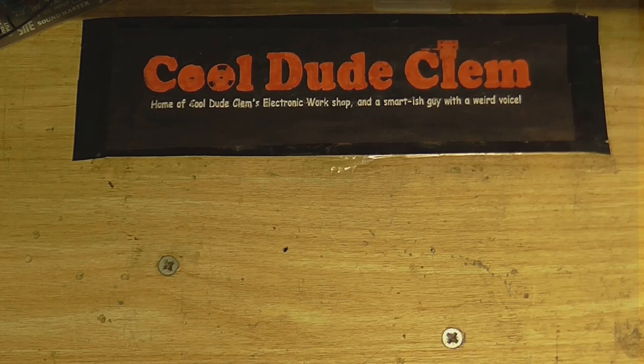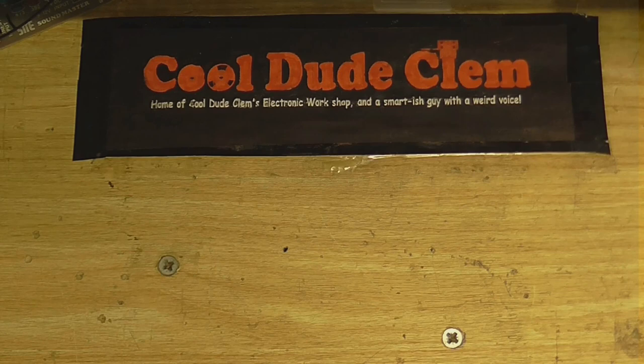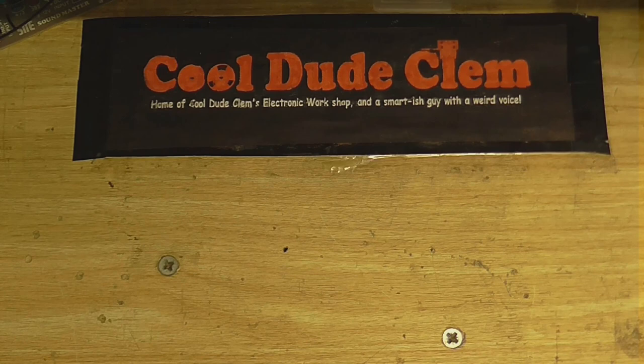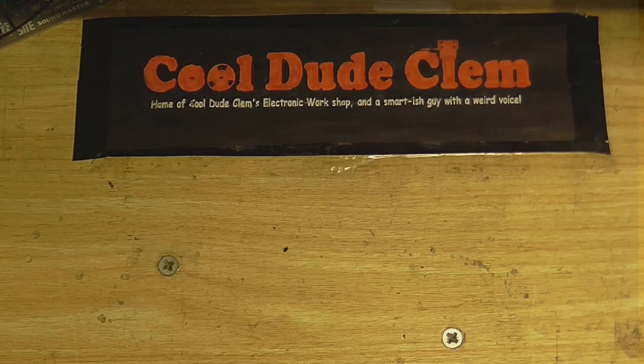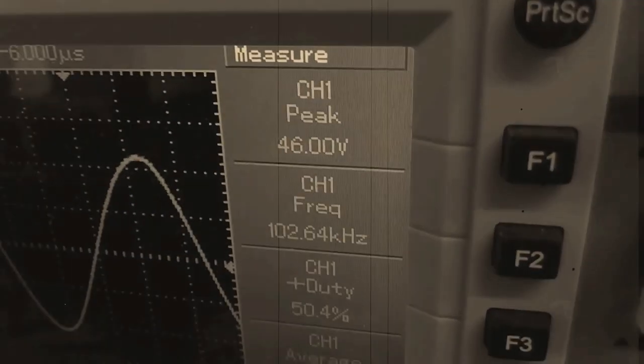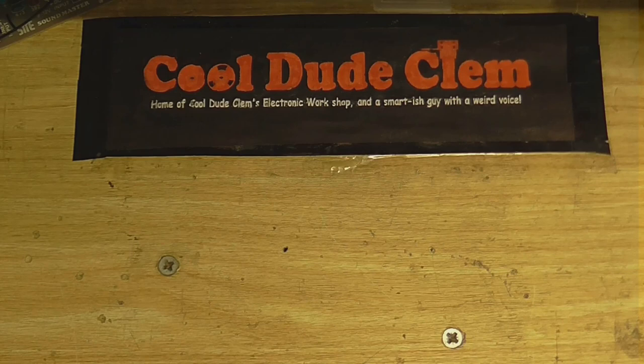Today on Cool Dude Clem's Electronic Workshop, I'm going to revisit the homemade tape recorder. You may remember in the previous video, it didn't work all that well. It did work sort of well, but it didn't work as well as it could have done. For starters, the bias was way too low. When I measured the bias on a proper tape recorder, it was around 45 volts. Although I don't think we're going to need that much bias, I think something around 30 volts will work pretty well.